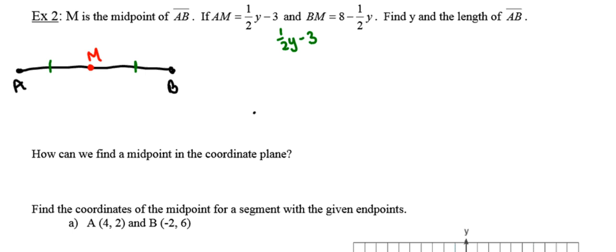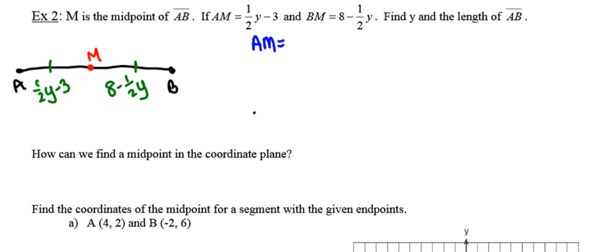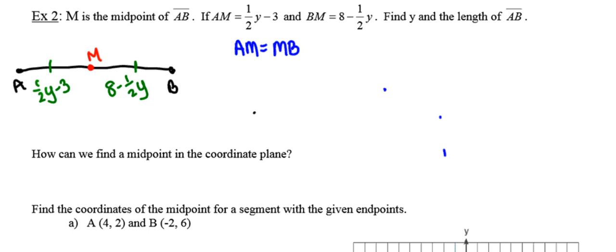I'm going to label my givens in the diagram. The distance from A to M is one-half Y minus 3. The distance from B to M is 8 minus one-half Y. This question is even a little bit more straightforward than the first one. This distance is equal to this distance, so we want to write an equation that sets the distance from A to M equal to the distance from M to B: one-half Y minus 3 equals 8 minus one-half Y.